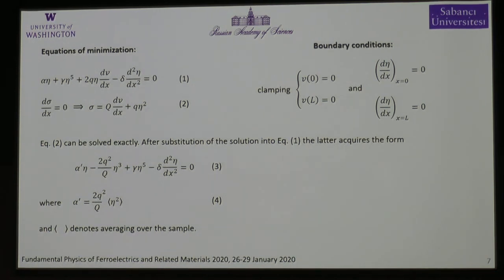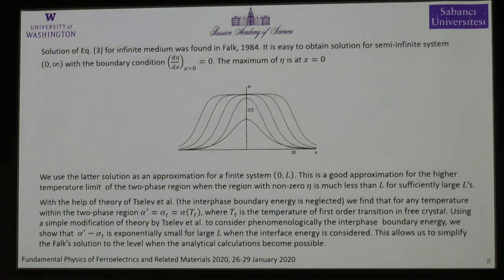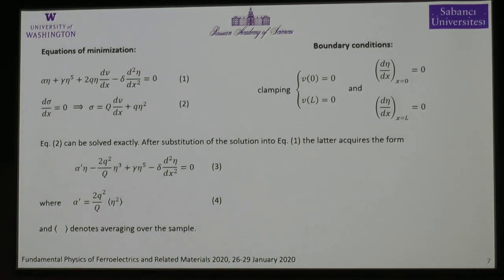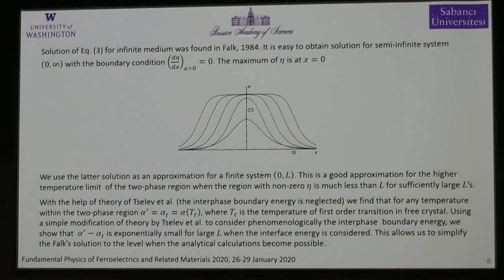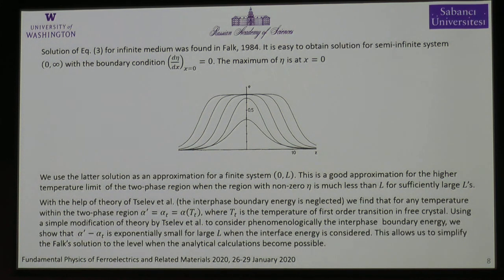We minimize and solve with respect to eta. The strains can be written in terms of the displacements. We have the stress equation in 1D and the equation of state for eta, with boundary conditions for displacement at both ends and for the order parameter at both ends of the one-dimensional system. We carry out further algebra — the details will be in a paper in progress. The solution was provided by Falk in 1984. We take the system from one end at 0 to the other end at Z = L, feeding that inhomogeneous profile in to compute the energy of the two-phase state.